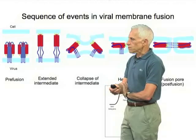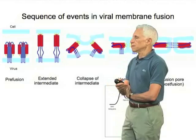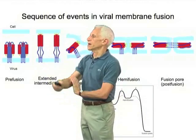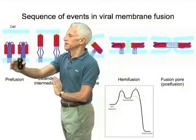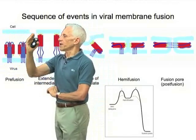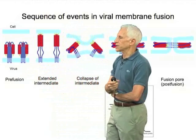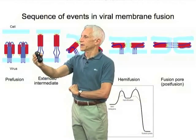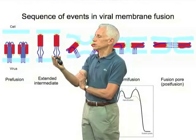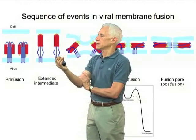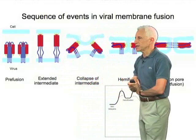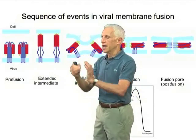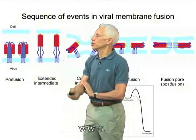Before events begin, the fusion protein is in some conformation — and this is a purely schematic representation — and there are two bilayers: the bilayer of the membrane of the virus, and the bilayer of the membrane of the cell to which the virus is attached. Some event, proton binding or receptor binding, induces a conformational change in the fusion protein that leads to the formation of an extended intermediate in which a hydrophobic element — either an N-terminal peptide or a loop in the middle of an extended part of the protein structure — interacts with the target cell membrane.